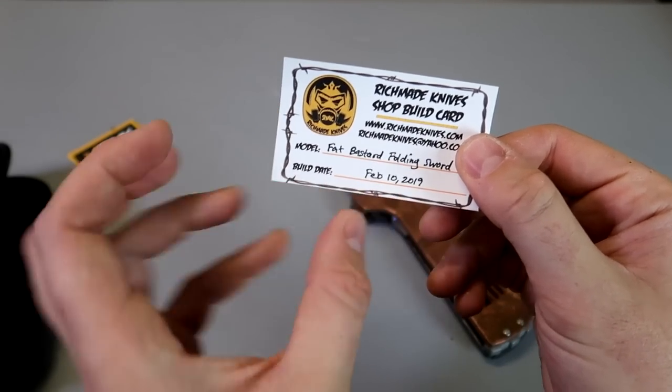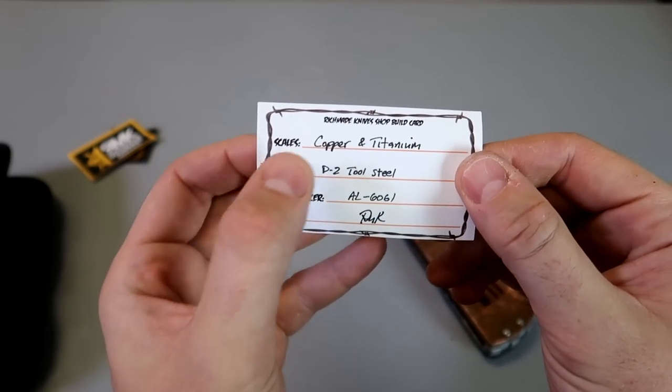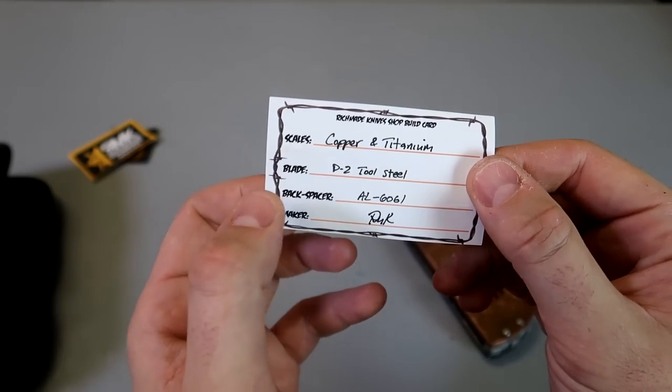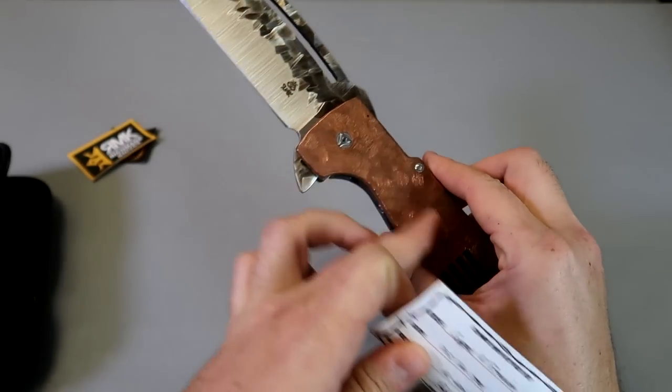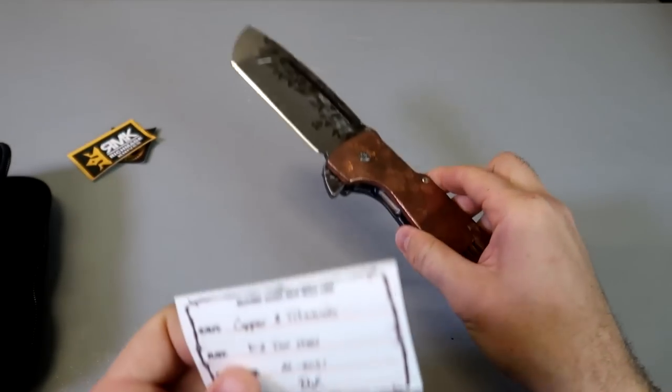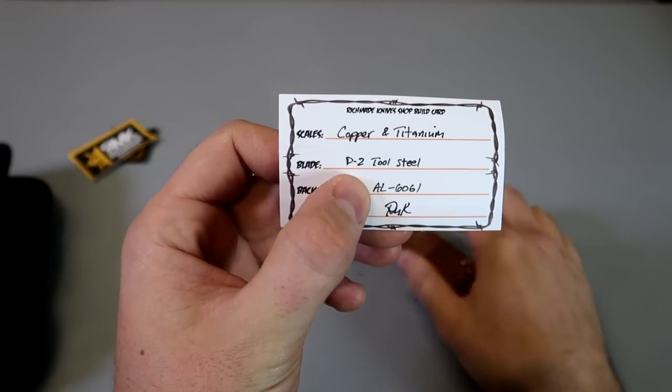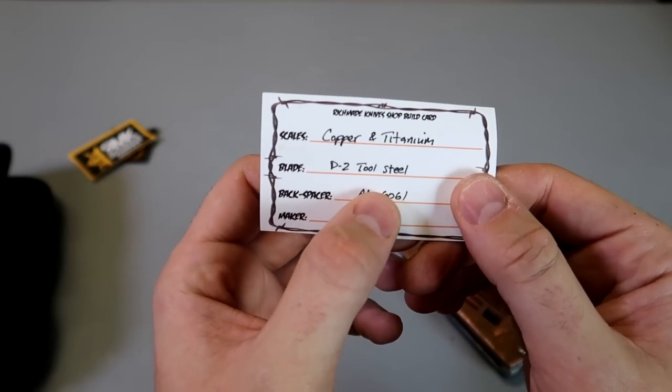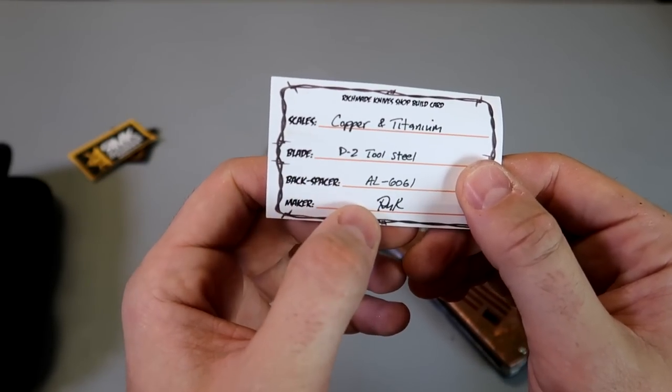February 10, 2019. This one was made copper and titanium and blade. So this is copper, this is titanium. And blade is D2 tool steel. So very expensive, high-end steel.